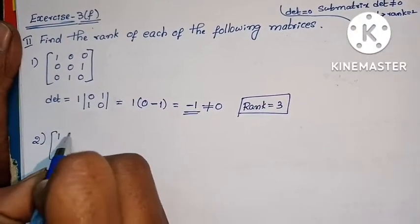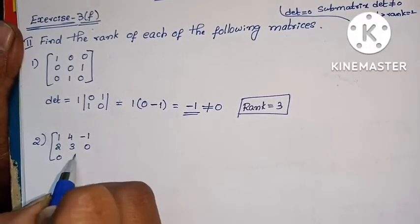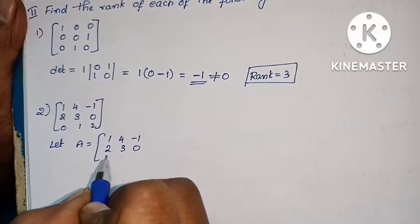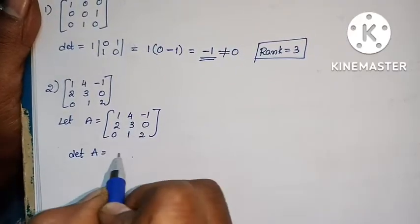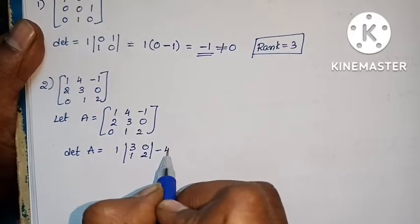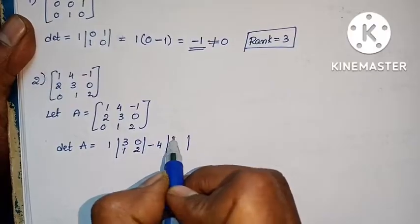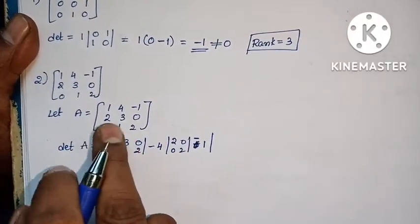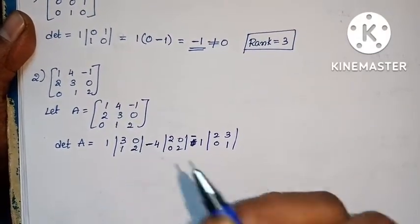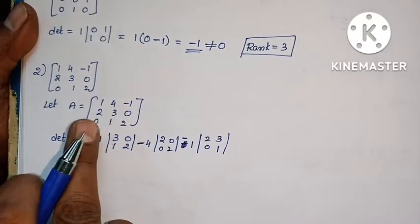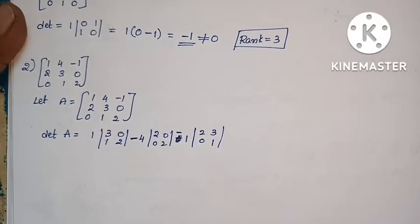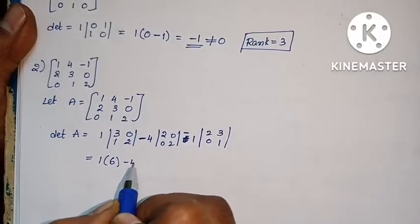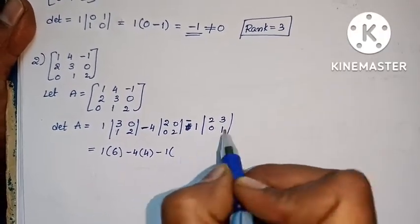Second question — let A equal to the matrix [1, 4, -1; 2, 3, 0; 0, 1, 2]. Now find the determinant of A. det(A) = 1 into det of [3, 0; 1, 2], minus 4 into det of [2, 0; 0, 2], plus (-1) into det of [2, 3; 0, 1]. Now, 1 into (3×2 - 0) = 6.